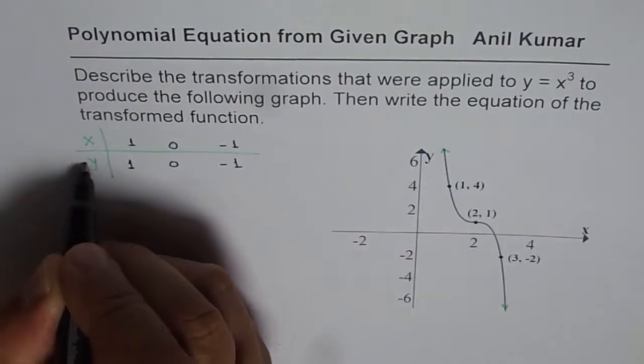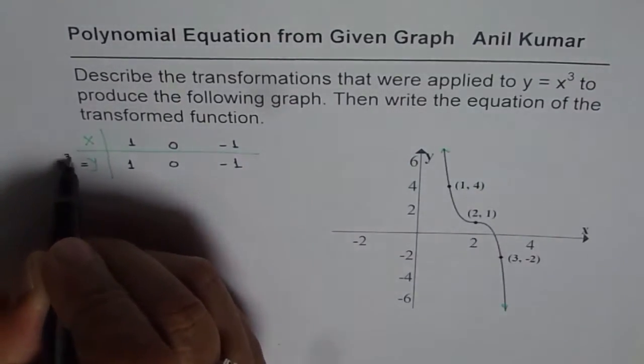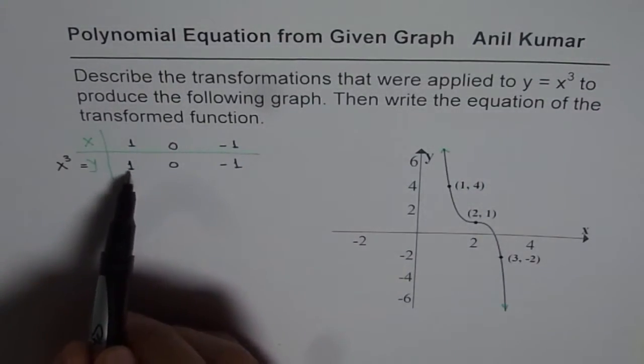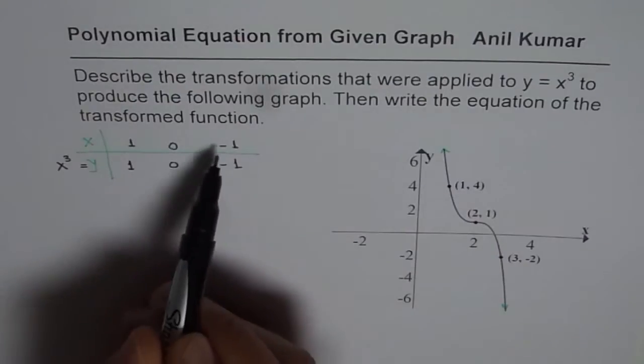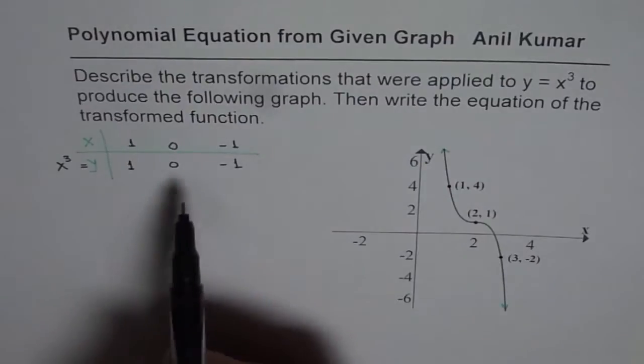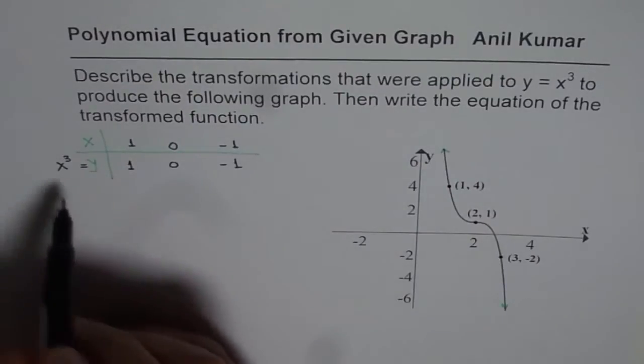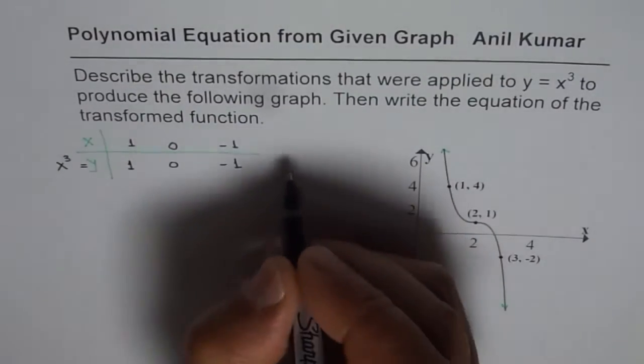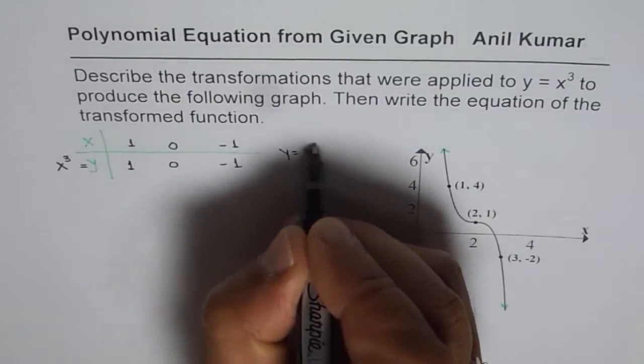Where we are saying y = x³, right? So cube of 1 is positive 1, cube of 0 is 0, cube of -1 is -1. So that gives us three points, and these are for the function y = x³.